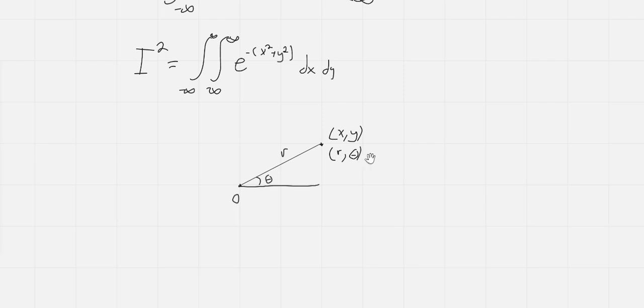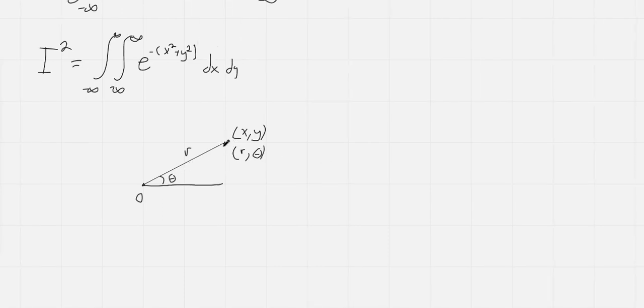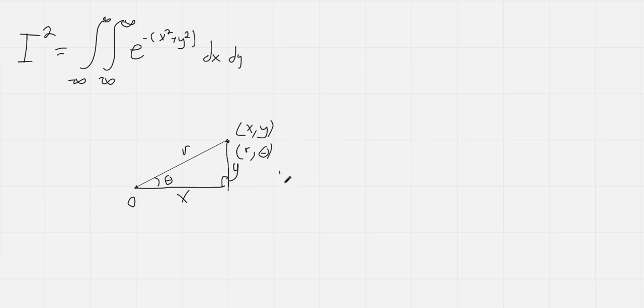Now we see that we have here basically a right triangle with one angle of theta, a hypotenuse of r, adjacent to the theta angle is x and opposite the theta angle is y. So from here we immediately see that x squared plus y squared equals r squared just by the Pythagorean theorem.